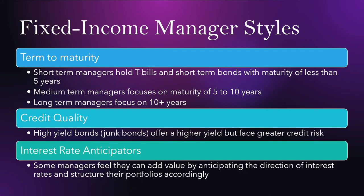There are also some fixed income manager styles, which are quite straightforward. First is term to maturity, where managers look at the maturity of a bond. Short-term managers hold T-bills or bonds with less than five years. Medium-term managers focus on maturities of five to ten years. Long-term managers focus on maturities of ten-plus years.